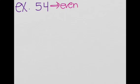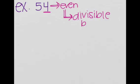How do we know it's even? Because the last digit is 4. And as our rule states, if the last digit is 0, 2, 4, 6, or 8, then it must be even. And therefore, 54 is divisible by 2.